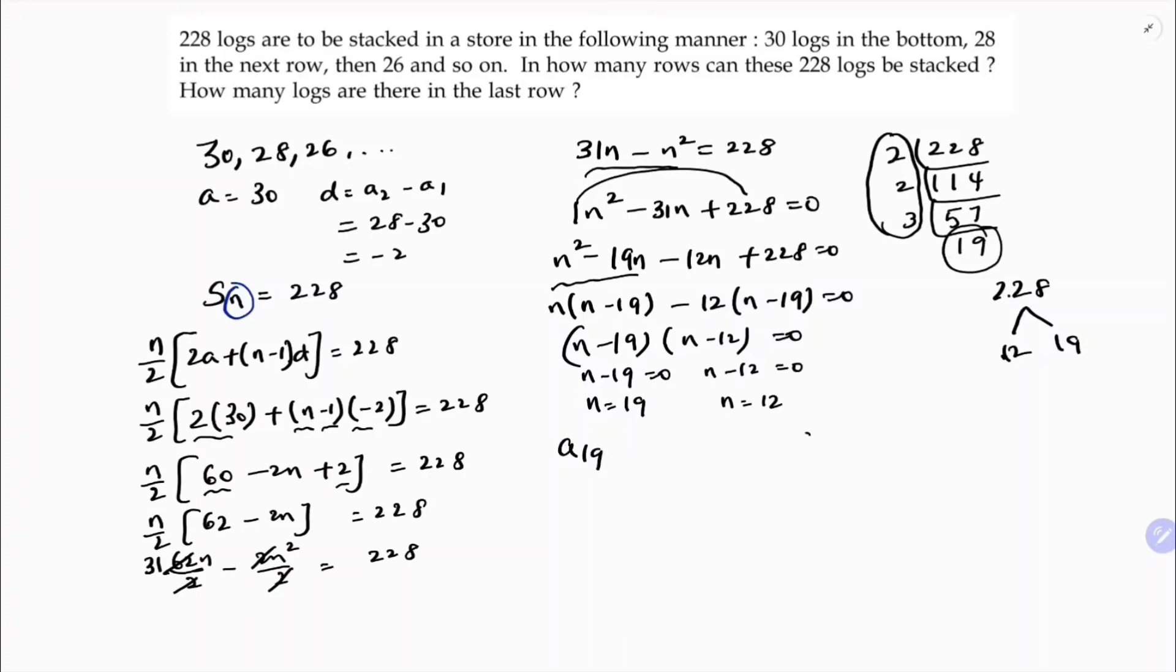a₁₉ and a₁₂. a₁₉ is a plus 18d, a₁₂ is a plus 11d. Now see here a₁₉ is a is 30 plus 18 into minus 2, 30 minus 36, so minus 6.